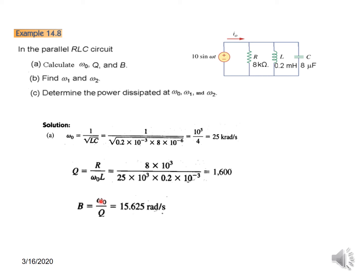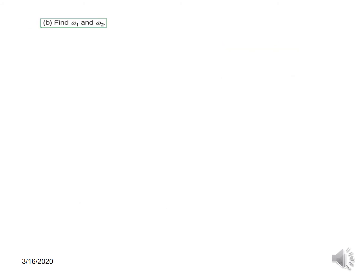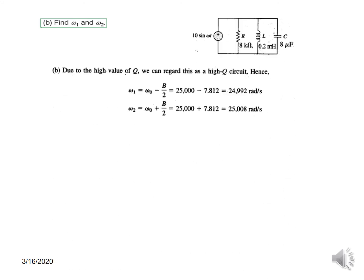Bandwidth we can calculate from this formula, plugging in the value of ω₀ and Q, bandwidth comes to be 15.625 radians. Now to find ω₁ and ω₂ we just plug in again the values in the formula ω₀ ± B/2, so plugging in the values you get the upper and lower frequencies.